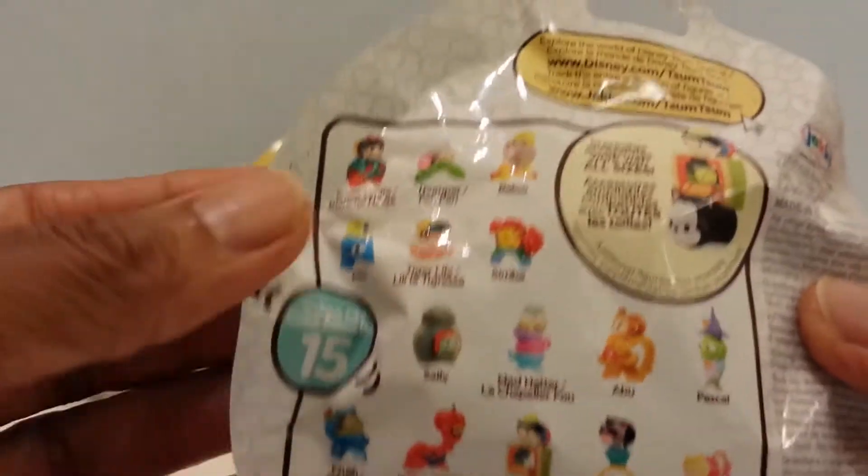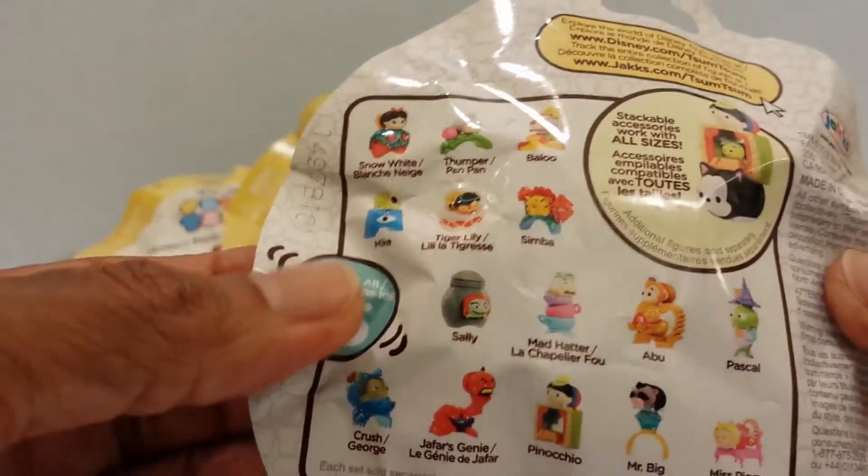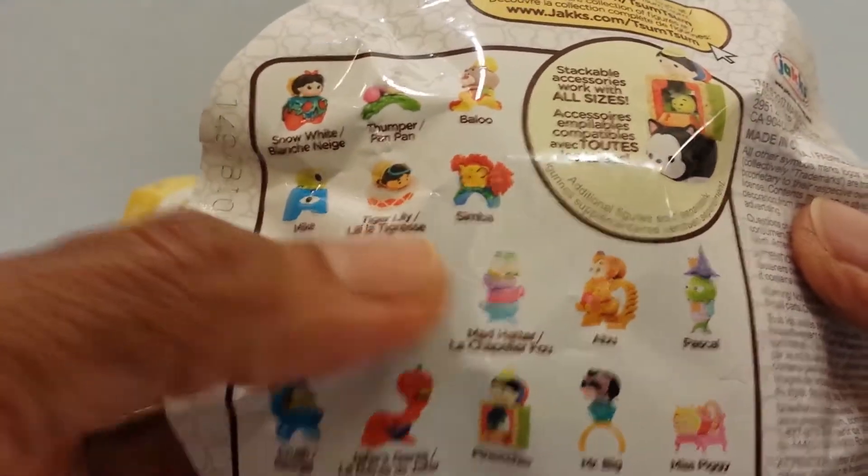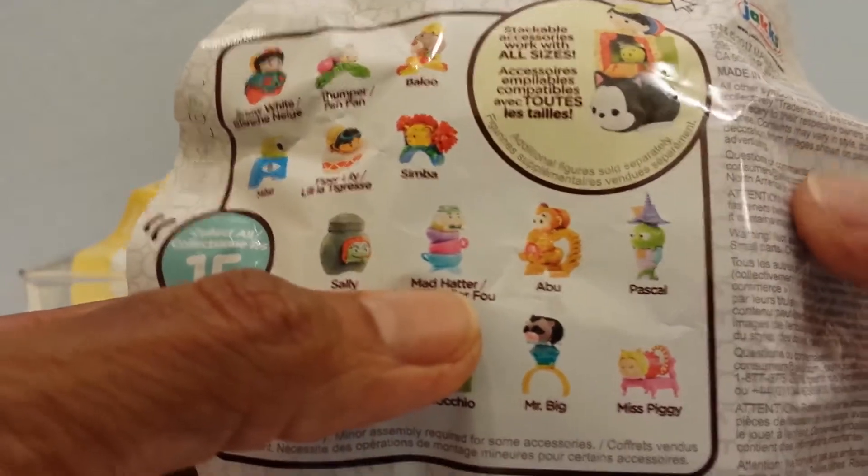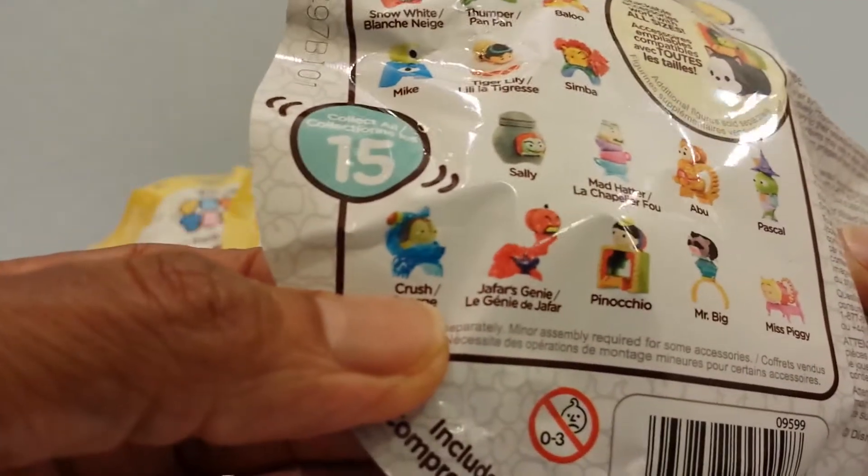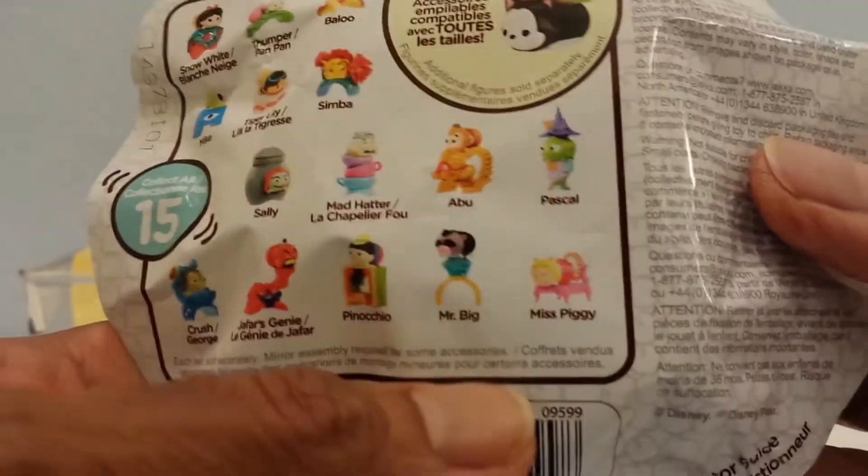Here we have Snow White, Thumper, Baloo, Mike, Tiger Lily, Simba, Sally, the Mad Hatter, Abu, Pascal, Crush, Jafar's Genie, Pinocchio, Mr. Big and Miss Piggy.